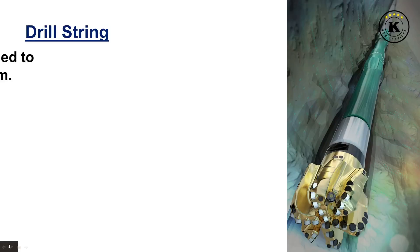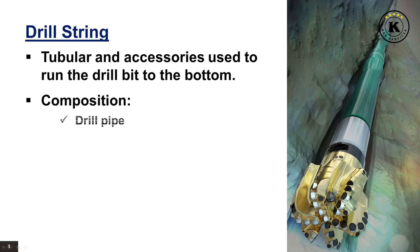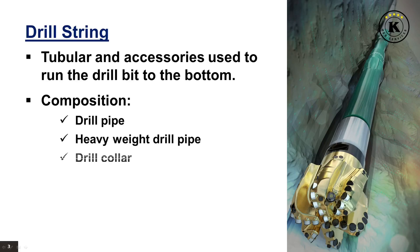The drill string means the tubulars and the accessories used to run the drill bit to the bottom. The drill string is composed of drill pipe, heavyweight drill pipe, drill collars, and other components like stabilizers and drilling jars.